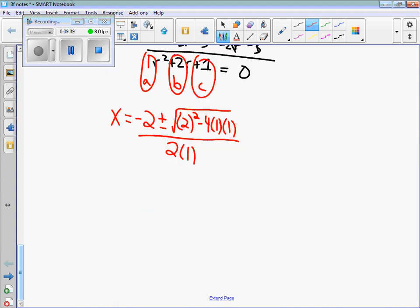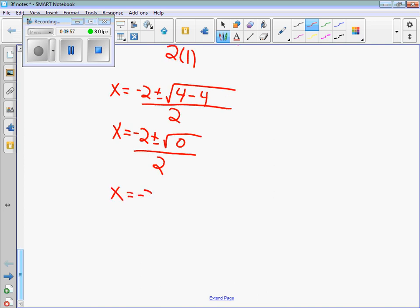Negative 2 plus or minus, do the exact same thing I just did before. 2 squared is 4, 4 times 1 times 1 is 4, over 2. And then I just do this subtraction inside, and it equals 0. That's great. Square root of 0 is 0. So when I break this up, you have negative 2 plus 0 divided by 2, and you have negative 2 minus 0 divided by 2. Negative 2 plus 0 is negative 2 divided by 2 is negative 1. Negative 2 minus 0 is negative 2 divided by 2 is negative 1. Actually, we only get the same answer. So that's okay. So let's just check, make sure that's a good answer.